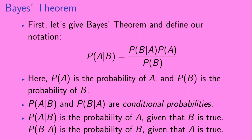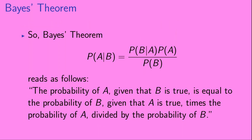So first, let's give Bayes' Theorem and define our notation. Bayes' Theorem goes as follows: P of A given B equals P of B given A times P of A divided by P of B. Here, P of A is the probability of A, and P of B is the probability of B. P of A given B and P of B given A are conditional probabilities. P of A given B is the probability of A given that B is true, and P of B given A is the probability of B given that A is true.